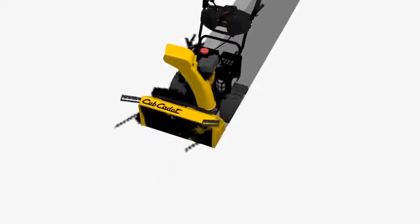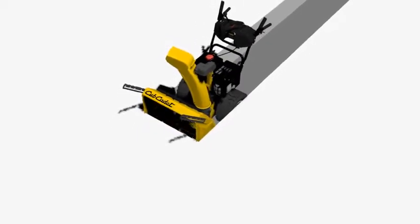Built entirely from solid steel, the 3X includes easy-to-control power steering, a self-propelled drive system, and single-handed chute control.